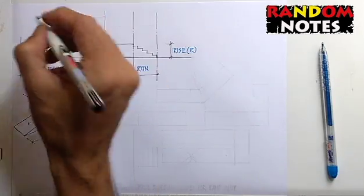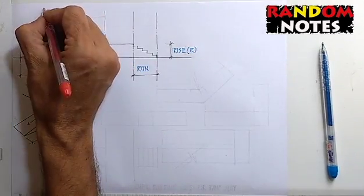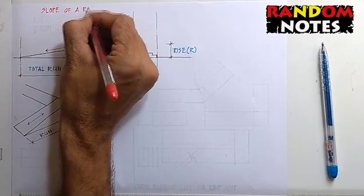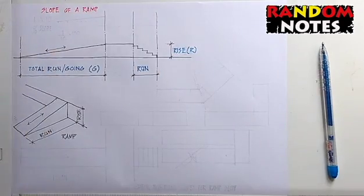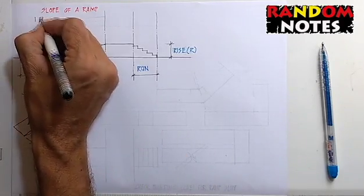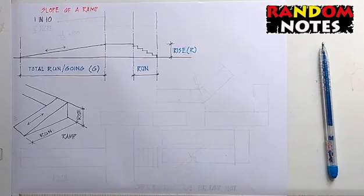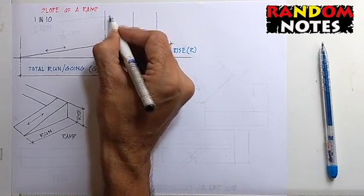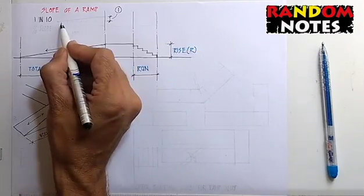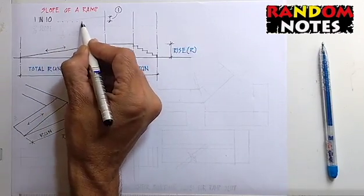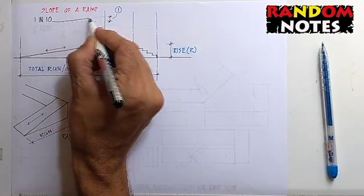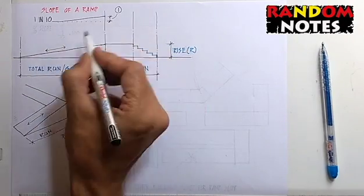We can say that a ramp has a slope of 1 in 10. This could be 1 in 8 or 1 in 12 or 1 in any number. For our case, we are taking it as 1 in 10. This means that for a rise of 1 unit, the ramp has a run of 10 units. And we say that the ramp has a slope of 1 in 10.